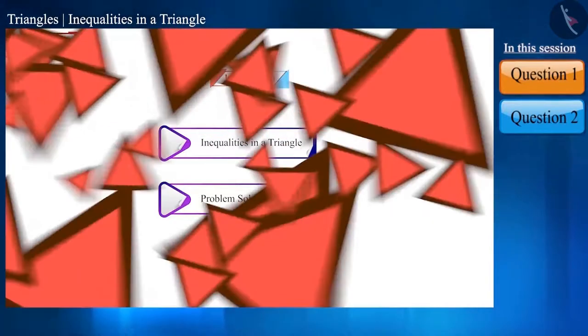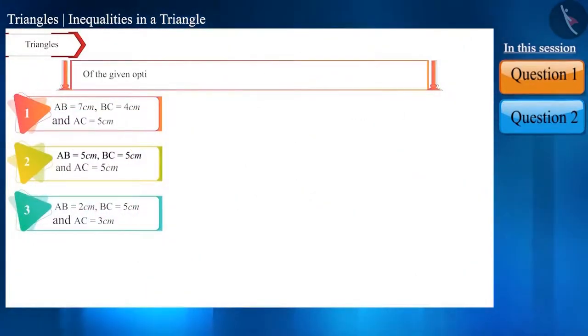So, let's start with the first question. Of the given options, which option is appropriate for the construction of triangle ABC?